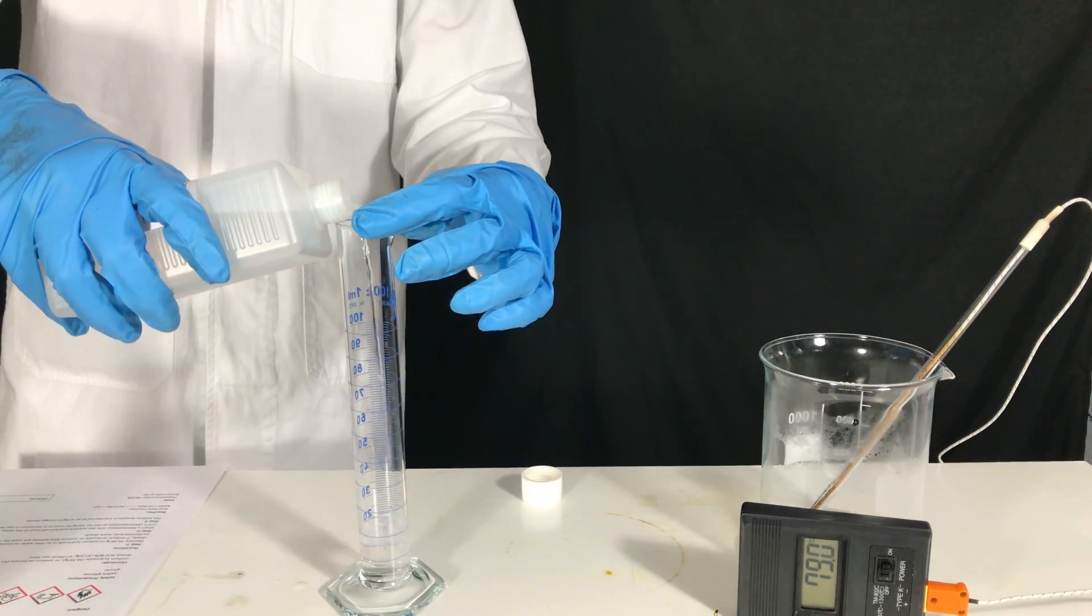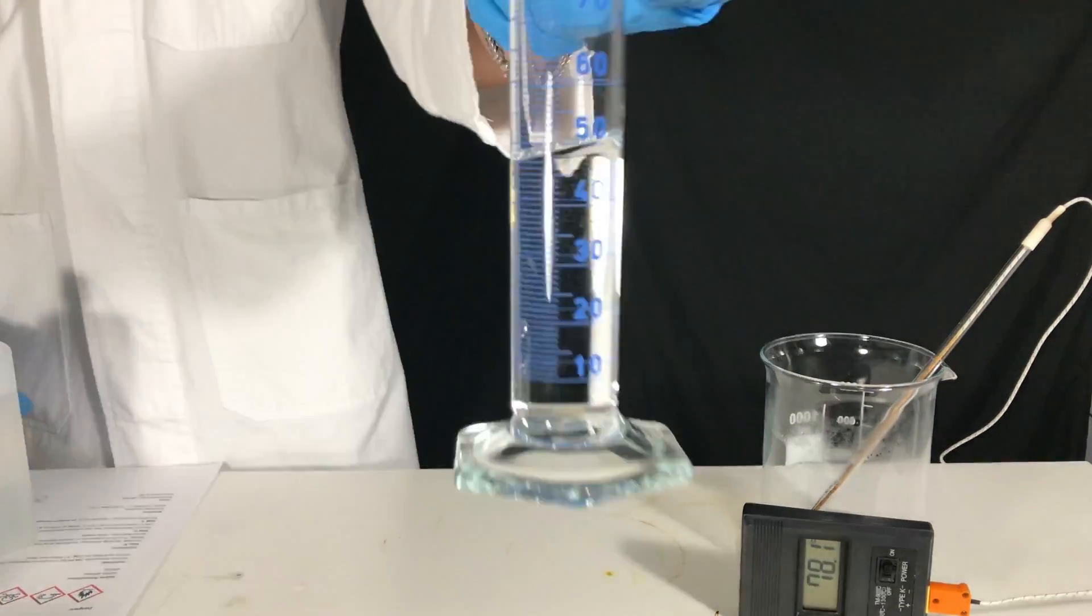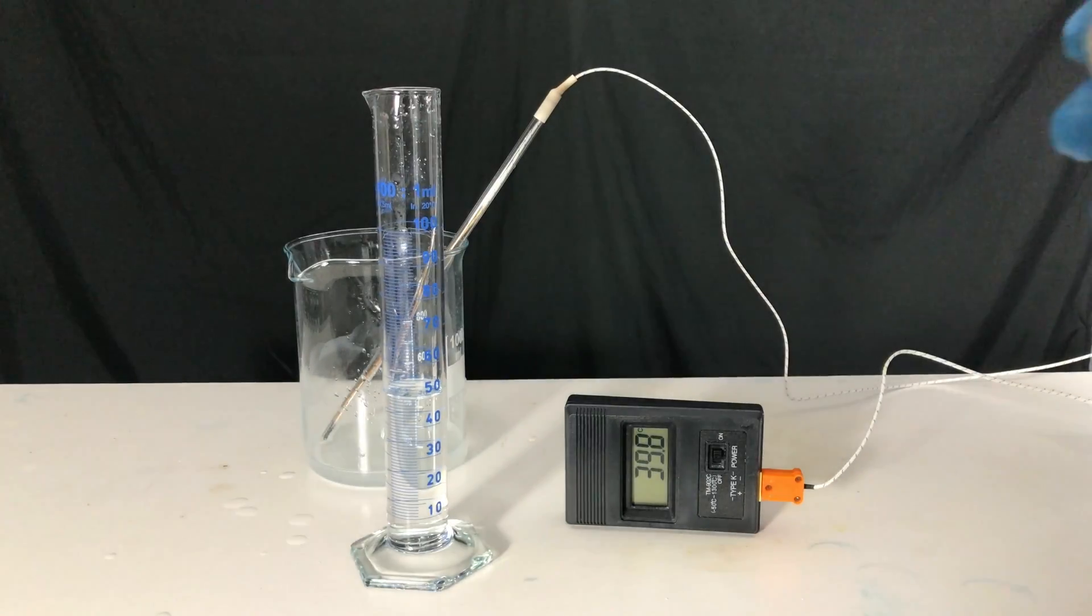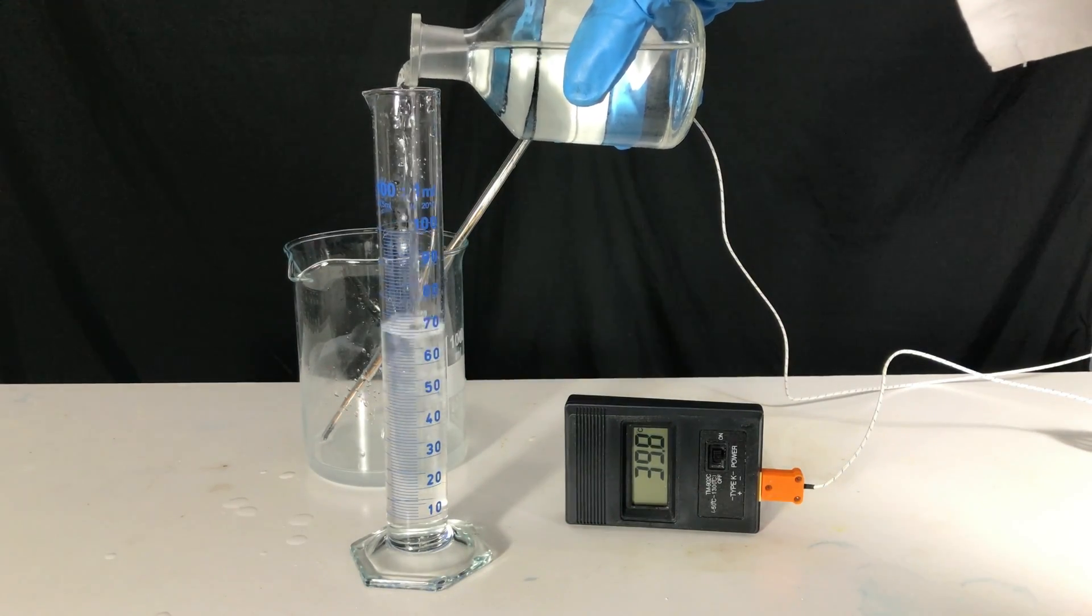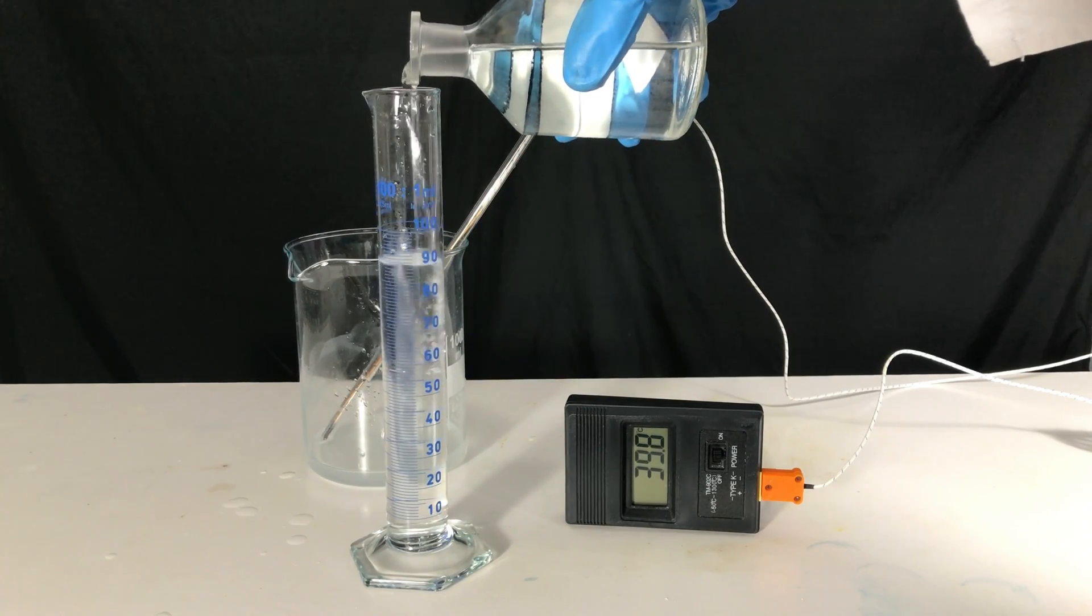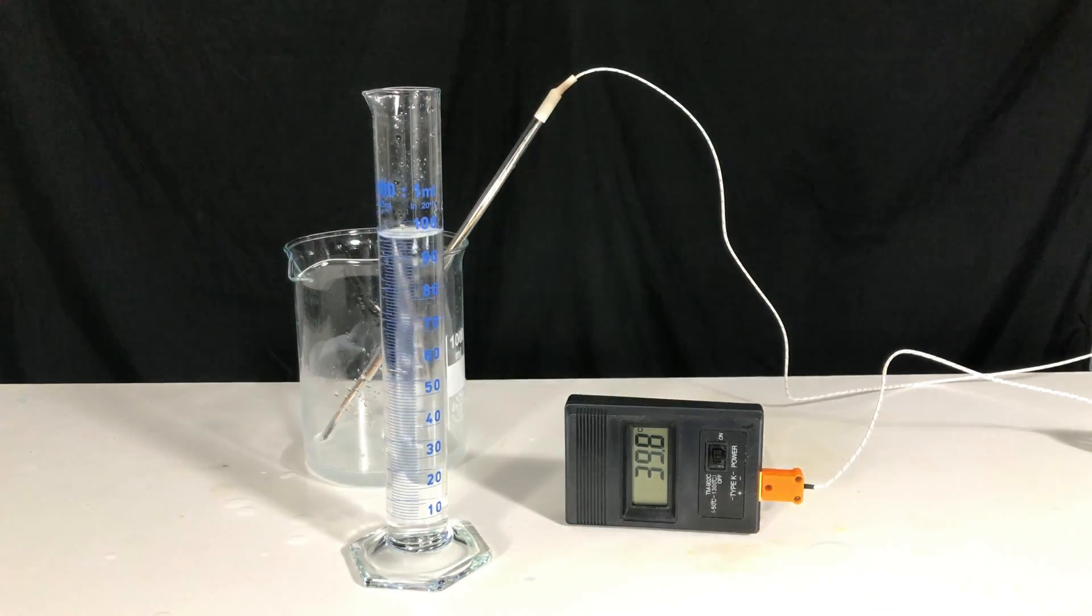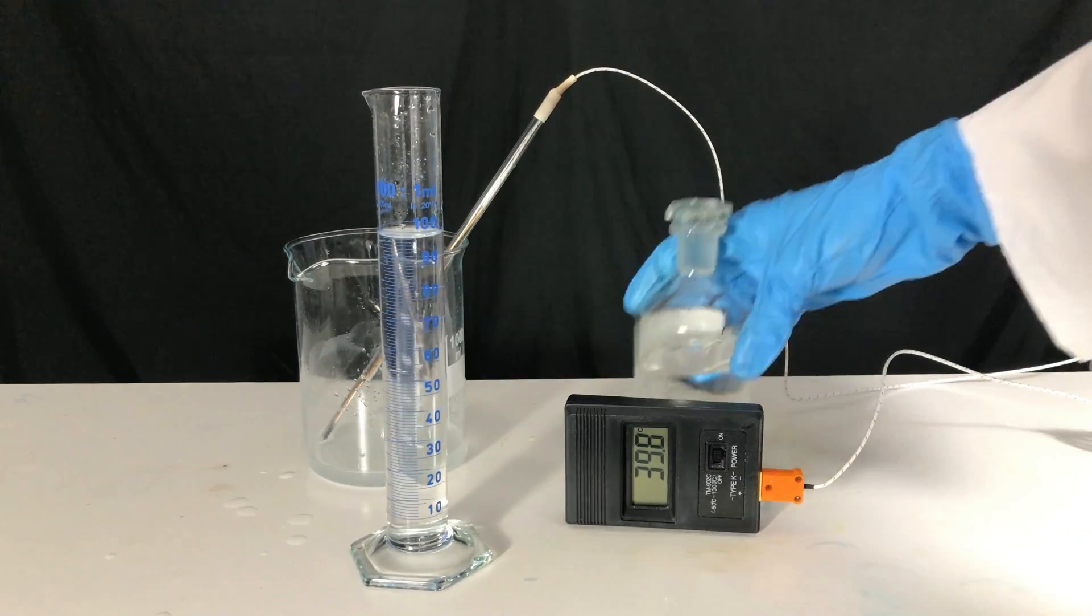50 ml of 80% formic acid were measured out. A small excess of formic acid is needed. Using distilled water it was diluted until it had a concentration of 40%. 50 ml of distilled water were added in total.